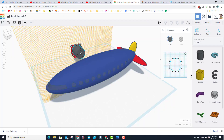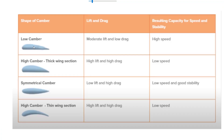With this extrusion we're going to create an airfoil. By adjusting the handles we have four airfoils to pick from: low camber, high camber with a thicker wing section, symmetrical camber, or high camber with a thin wing section. Notice two have the same shape but one is cut underneath. The shape of your camber gives different characteristics — moderate lift low drag, high lift high drag, low lift high drag, and high lift high drag — resulting in different speed and performance capacities.